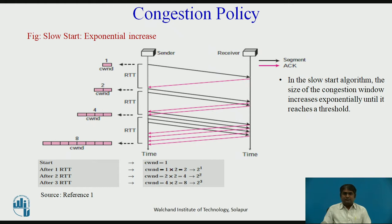If we look at the size of the congestion window in terms of round trip times (RTT), we find that the growth rate is exponential. When it starts, the congestion window size is 1. After 1 RTT, the congestion window size is 2. After the 2nd RTT, it is 4. And after the 3rd RTT, the congestion window size is 8.